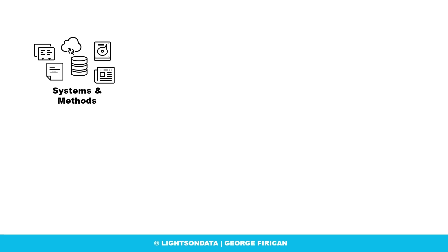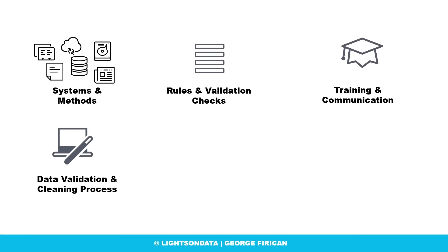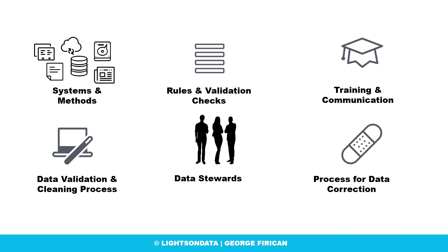So how did you fix this issue? You identified all the systems and methods that would capture this information. You created a set of rules and validation checks that must be passed before the customer information is entered into your systems. You provided training to sales representatives and taught them why this is important — they need to care, they need to understand why this matters. You then built a data validation process to check for and correct inaccurate customer emails, of course with the help of IT, not just single-handedly. You assigned data stewards for continuous monitoring and created a process to obtain invalid or missing emails.